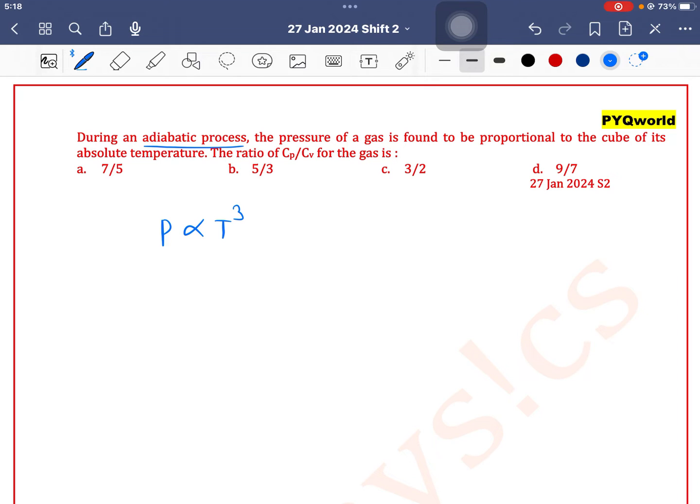Okay, first we will write the process equation for this. Process equation for adiabatic process is P into V to the power gamma is equal to constant.